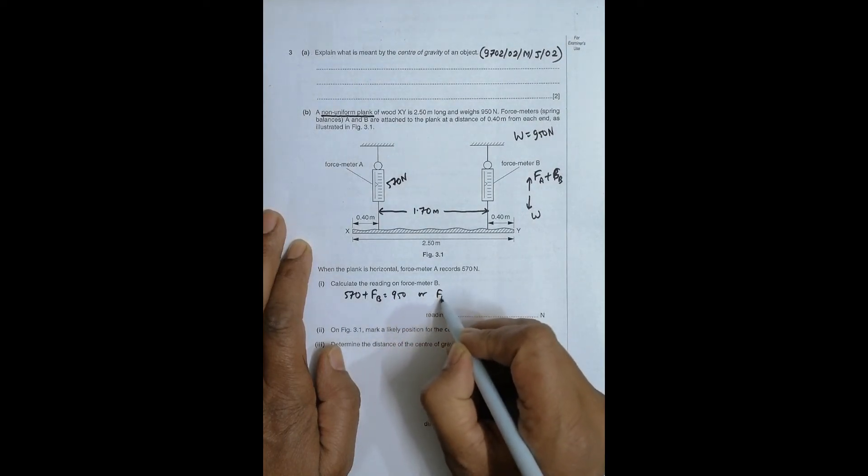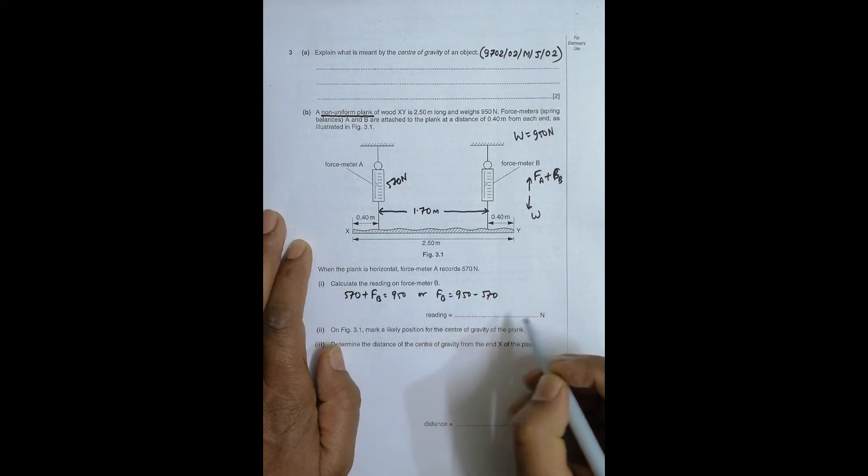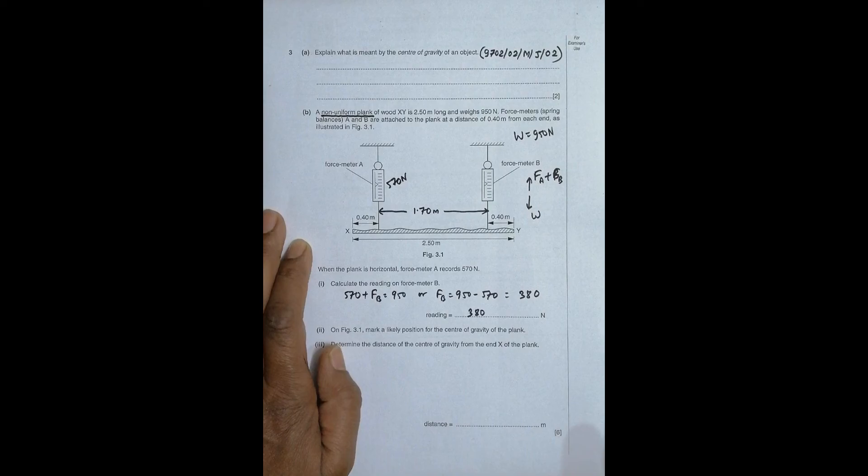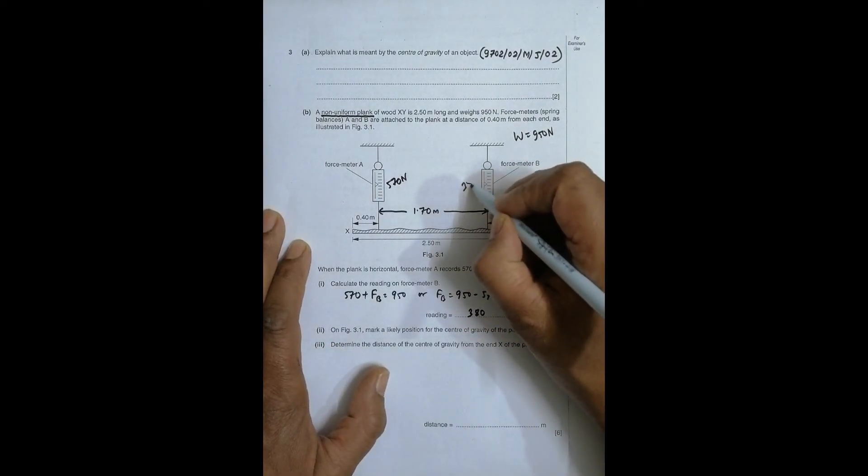So we must have FB is equal to 950 minus 570. That will be equal to 380 Newton. So the reading here will be 380 Newton.